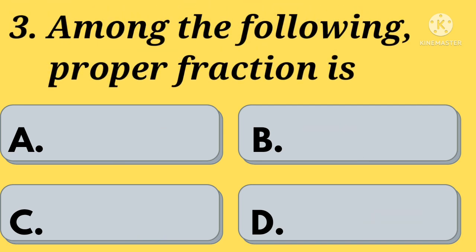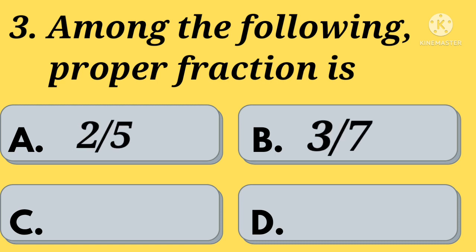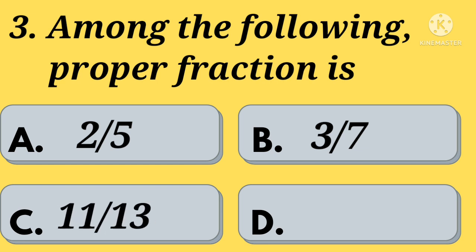Among the following, the proper fraction is — Option A: 2 by 5. Option B: 3 by 7. Option C: 11 by 13. Option D: All. Your time starts now.